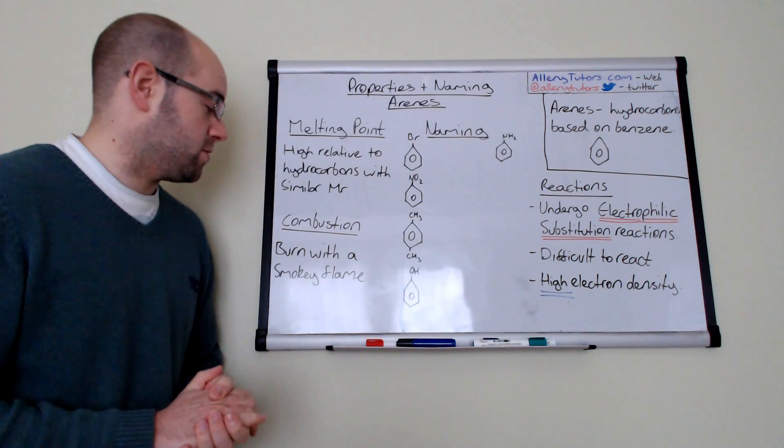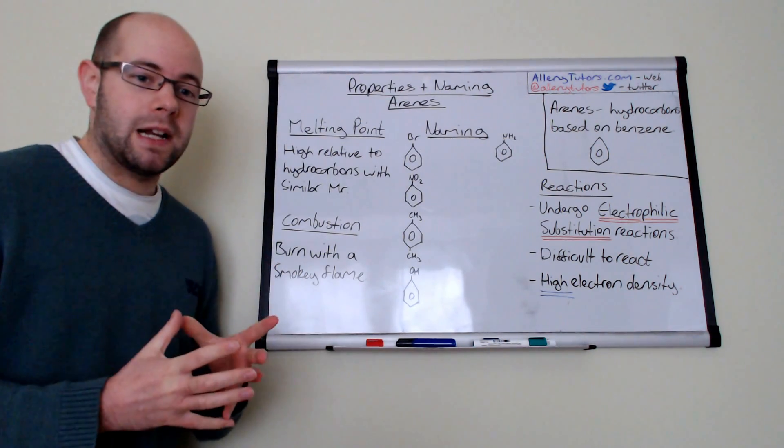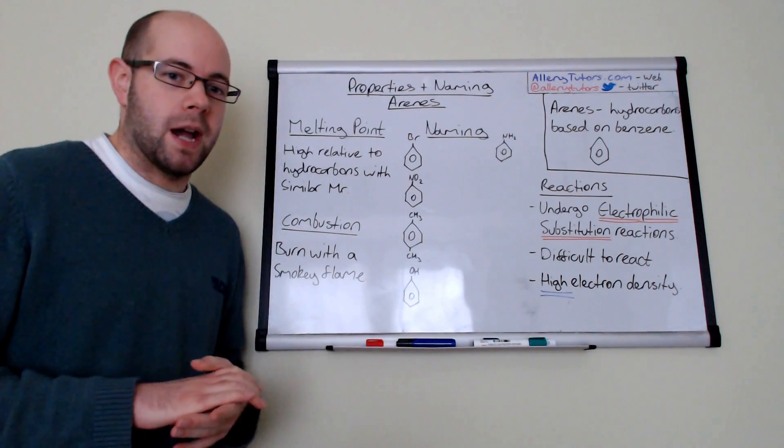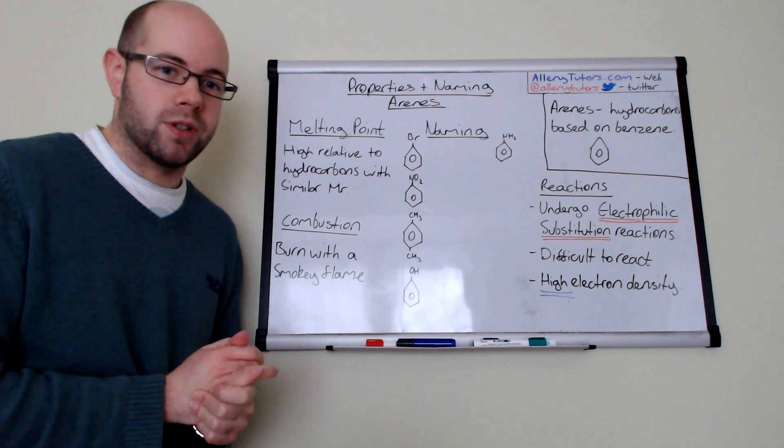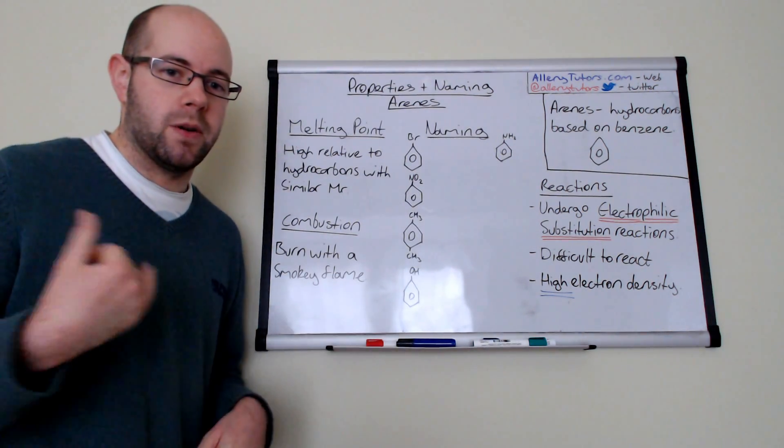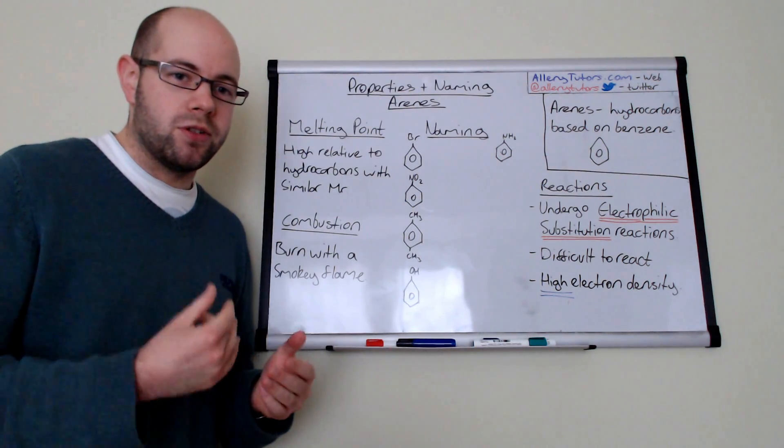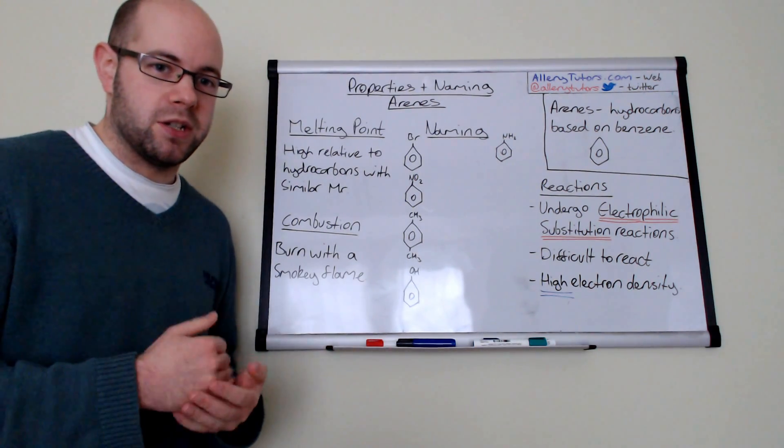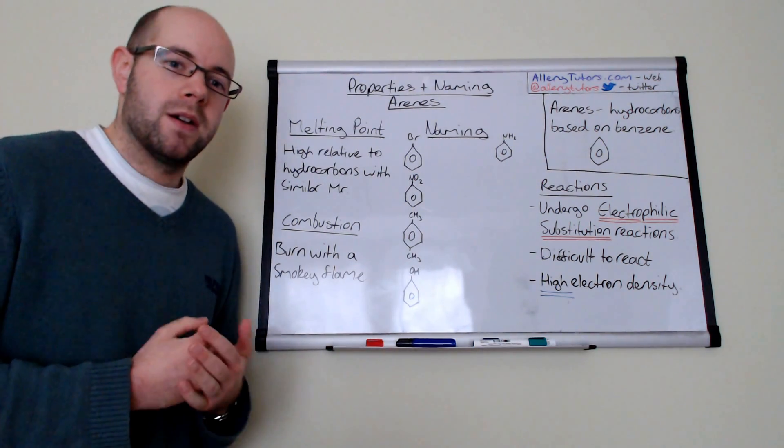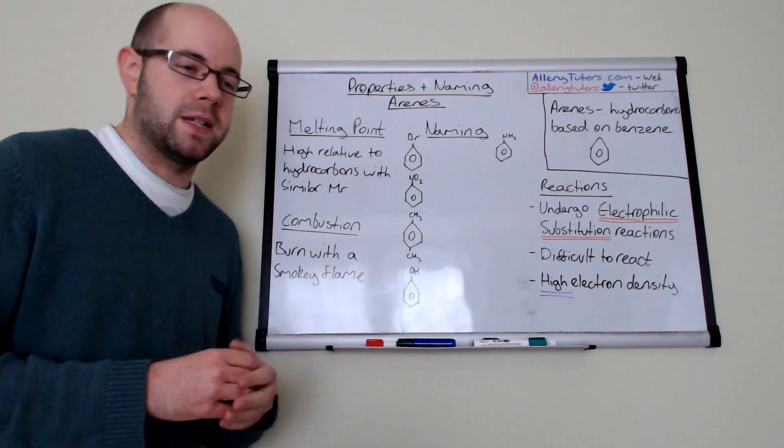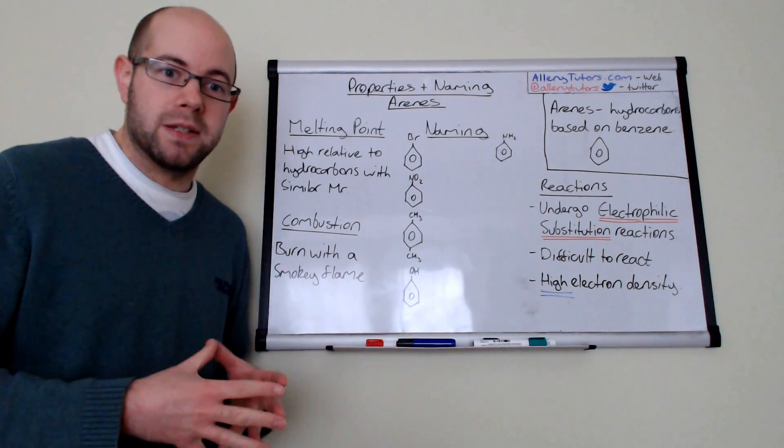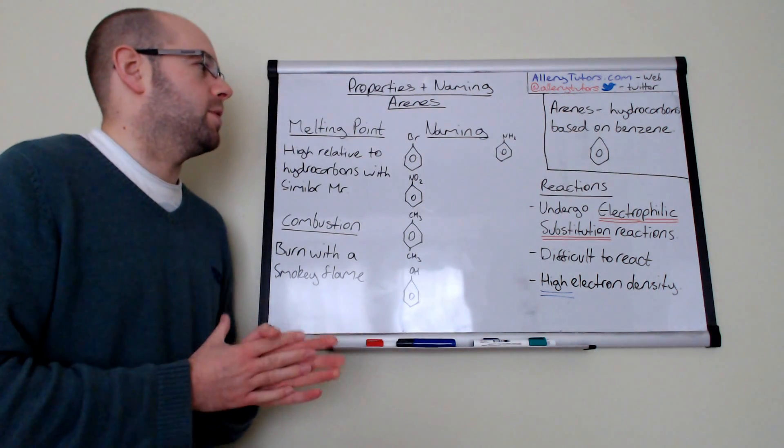In terms of nomenclature, naming them can be a little bit tricky. There are very complicated rules regarding whether you call it a phenyl or a benzene. You don't need to know the rules but what it means is you do have to remember which molecules are named phenyl and which ones are named benzene. The majority of them are benzene but there are some phenyl ones as well.